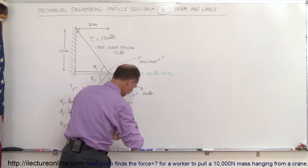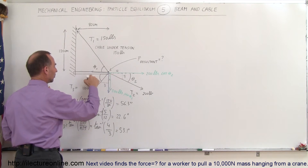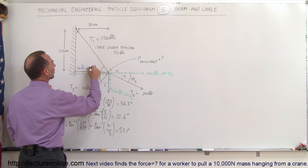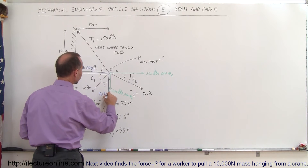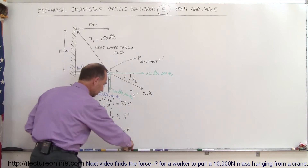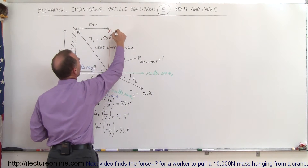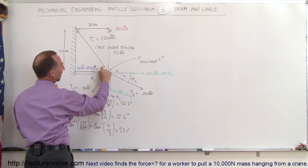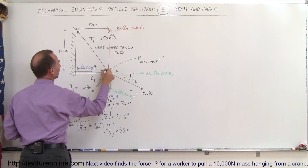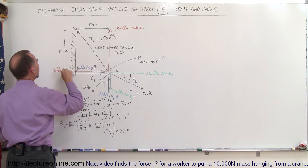For the 100-pound force, the horizontal component is 100 pounds times the cosine of theta 3, and the vertical component is 100 pounds times the sine of theta 3. For the cable, the component in this direction is 150 pounds times the sine of theta 1, since that's the opposite side. The other component is 150 pounds times the cosine of theta 1, the adjacent side.